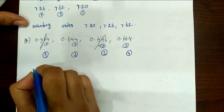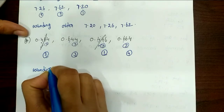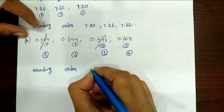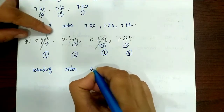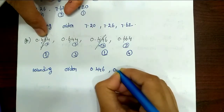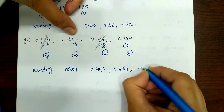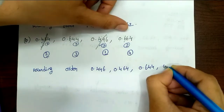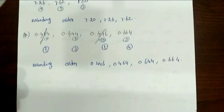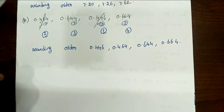So the ascending order is: first 0.446, next 0.464, next 0.644, then 0.664. That's it for this set. The last problem in this group follows.